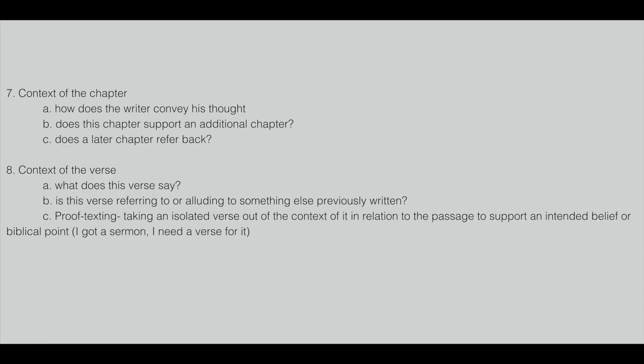We've already covered what is the occasion of the writing. Now, when you approach the text — whether you're looking at a verse or wrestling with one — you need to first understand what is the context of the chapter. Don't just isolate one verse; look at the broader scope. What does the chapter mean? How does the writer convey his thought? Does this chapter build off itself or support an additional chapter? Once you understand the author's style of writing, it makes it much easier to understand what is actually being said.